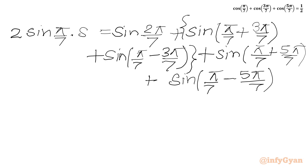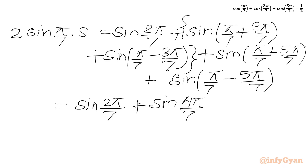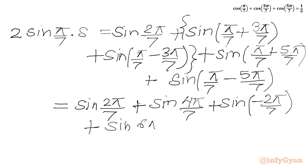Now we simplify the RHS. The first term is sin(2π/7). The second term gives sin(4π/7) + sin(−2π/7). The third term gives sin(6π/7) + sin(−4π/7). Using sin(−θ) = −sin(θ), sin(−2π/7) becomes −sin(2π/7) and sin(−4π/7) becomes −sin(4π/7).